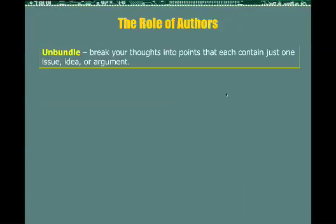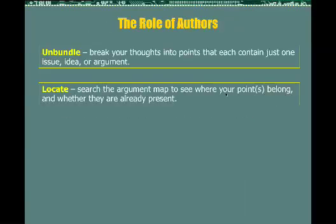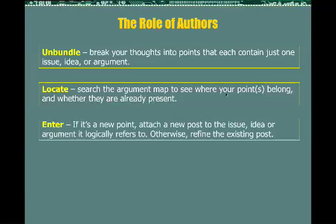So what is the role of authors in a system like this? First, you have to unbundle, which means you have to break your thoughts into points that each contain just one issue, idea, or argument. Second, you have to locate your posts correctly in the argument map, which means searching the map to see where your points belong and whether they are already present. Then you enter your point — if it's new, you attach it to the issue, idea, or argument it logically refers to. If it's a point already made to some extent in the map, you can refine it to incorporate any additions you may have.